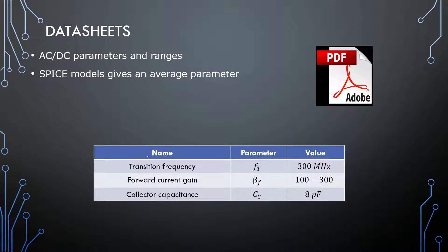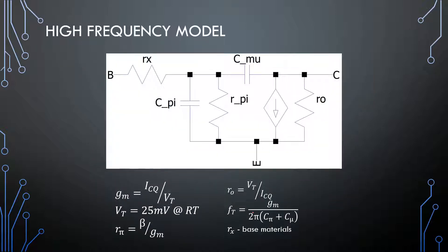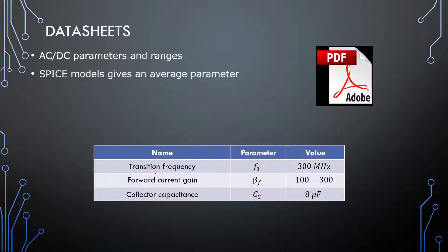A data sheet usually gives us the transition frequency, the forward current gain as a range, and the collector capacitance. That is only one of these parameters, maybe two partly. A data sheet typically doesn't give us all the parameters that we want to know. I am quickly going to open the data sheet and show you.